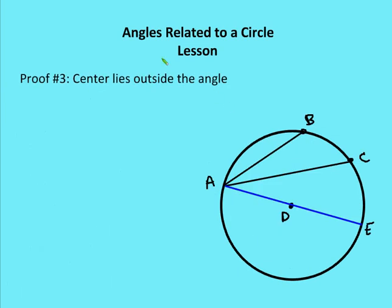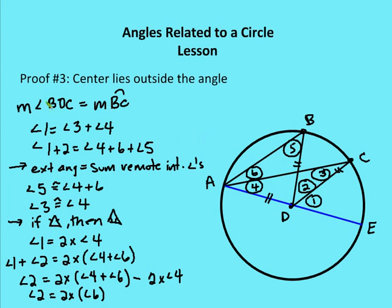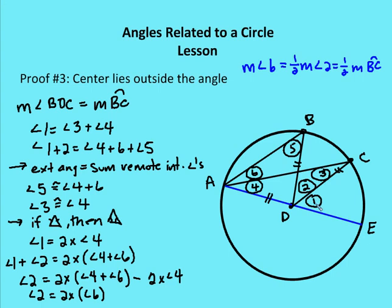The last case is where the center lies on the outside of the angle. We're trying to find the measure of angle BAC. I've drawn a diameter here, and we're going to use subtraction but the same principle as the first two proofs. The measure of angle BDC equals the measure of arc BC. I'm trying to prove that angle six (angle BAC) is equal to one half the measure of central angle two, which equals one half of arc BC. Angle one equals angle three plus four — two remote interior angles equal to the exterior angle.